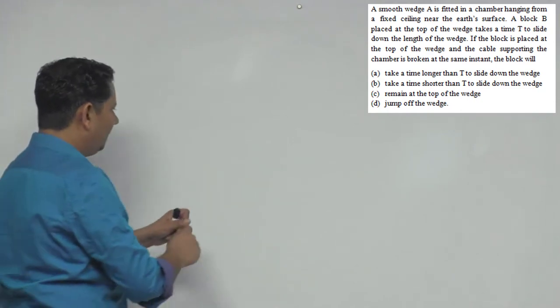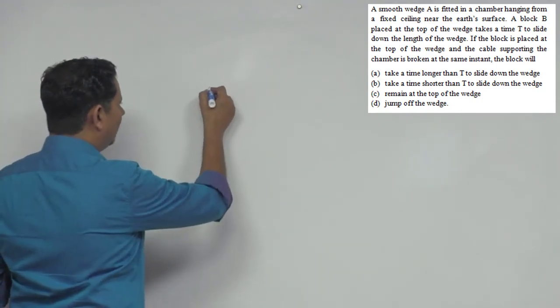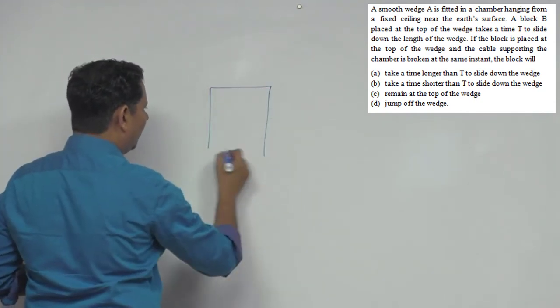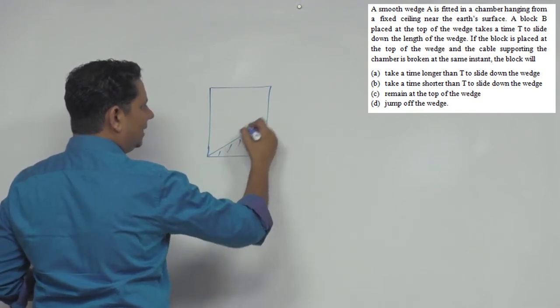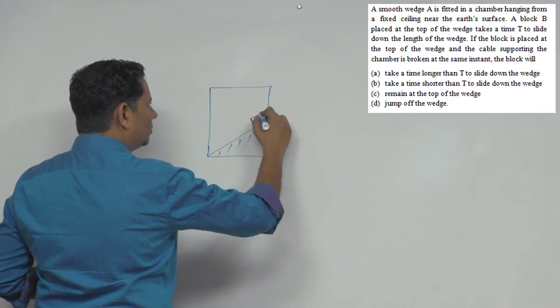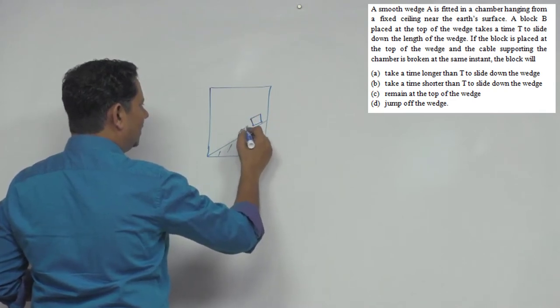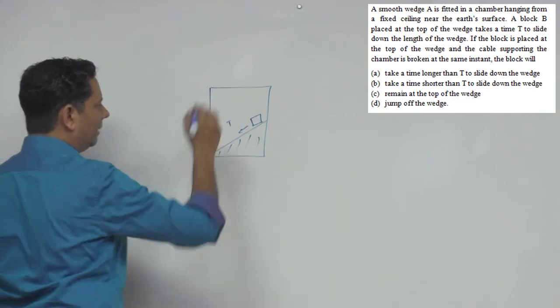Conceptual achha sawal hai. To scenario ye hai - maan lijiye aapki lift hai or let's say is lift mein yahan par aise incline plane bana hua hai, uske upar aapka ye wedge rakha hai. Upar se niche aane mein isko time T lagta hai. Thik hai, ye aapka scenario hai.